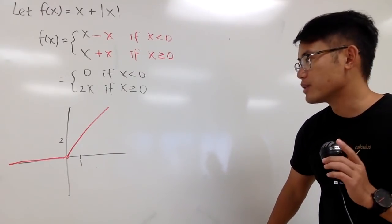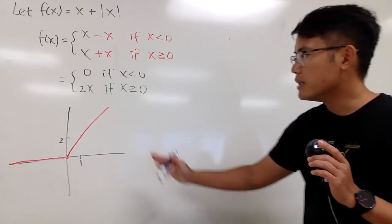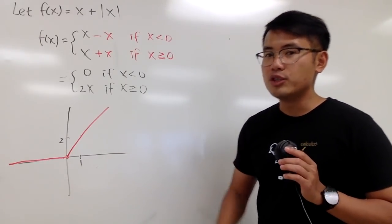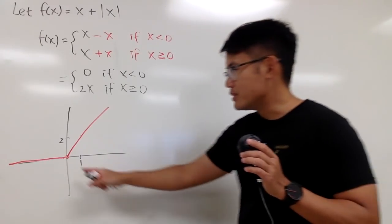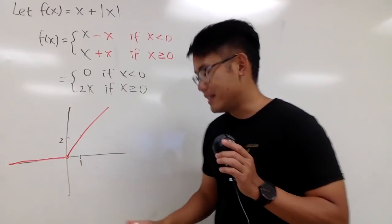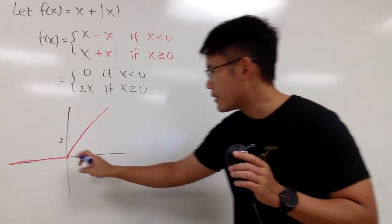And now, here's the question for you guys. Where is this function not differentiable? Well, we do see that there is a corner, right? And in fact, this is the bad number here.